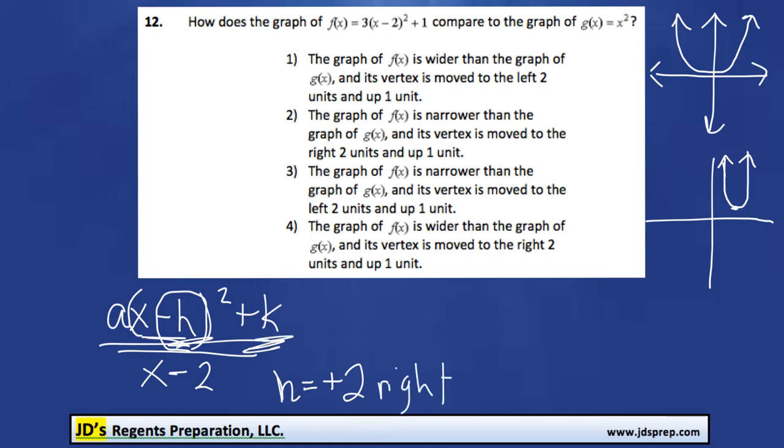And the k value tells us if it's moving up or down. And because it's not being subtracted in this formula, if it's positive, it's going up. If it's negative, it's going down. So because up here it's plus 1, our k is positive 1, that means it's going to move 1 up.